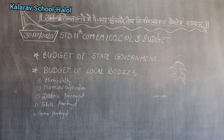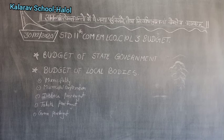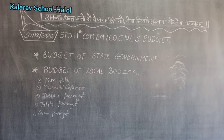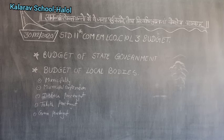Now in this section we will try to understand the components of the budget of state government, and then the budget of local bodies, which includes municipality, municipal corporation, district panchayat, taluka panchayat and gram panchayat. One more pattern of budget is the budget of the cantonment zone.